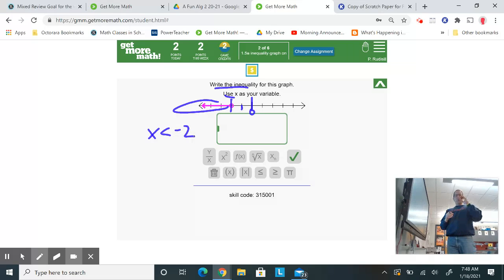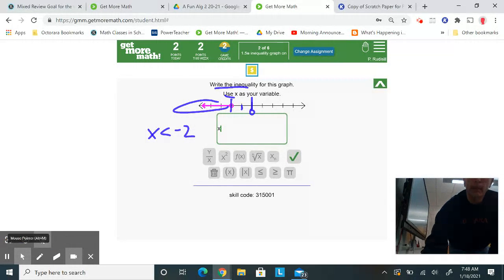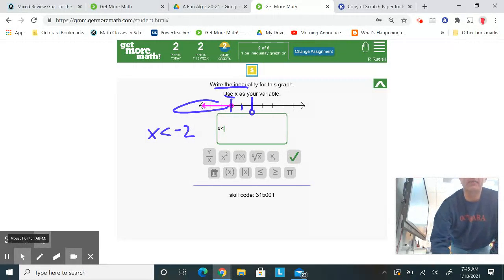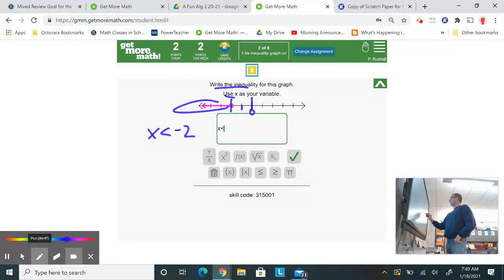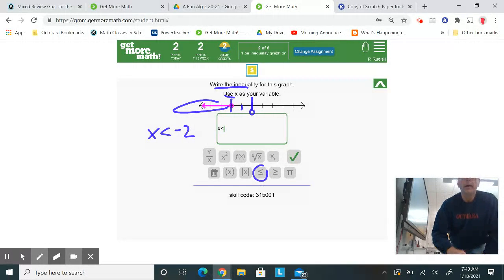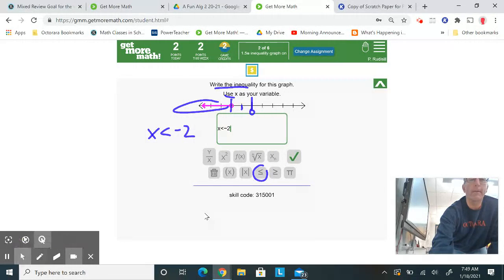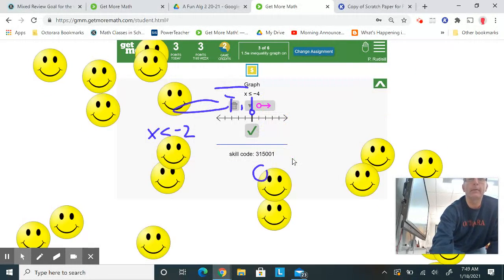And the circle's not shaded in, so it's just a less than sign. So if I type in x, and then the less than is on your keyboard, if it was a less than or equal to, it would be here. But we don't need that. We don't want the equal sign. And then I want a negative 2. Type that in. I think we got it.